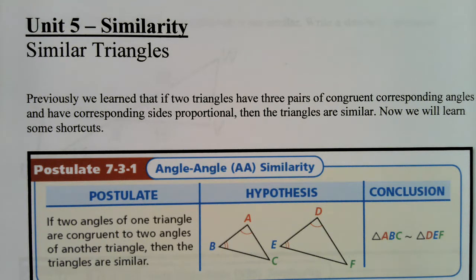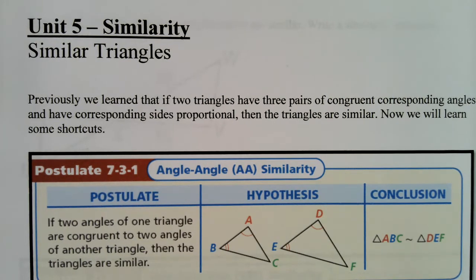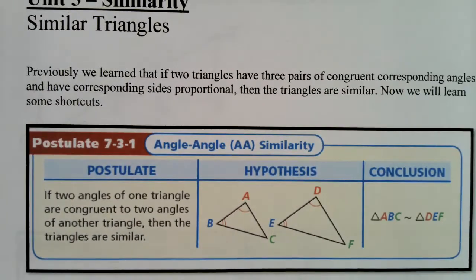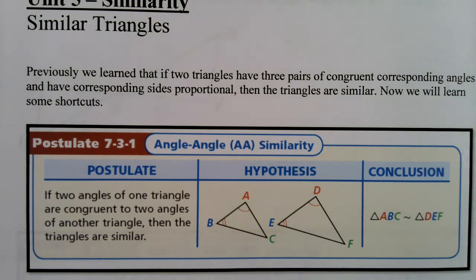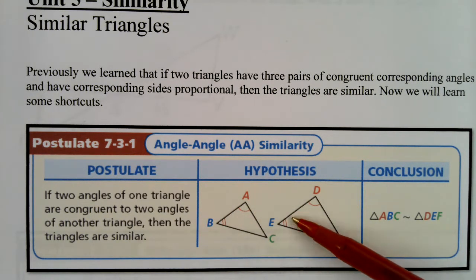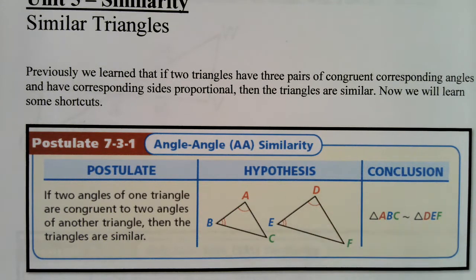Now we're going to learn some shortcuts, and there are three shortcuts that we're going to do today — that's it, there are no more shortcuts after today. The first shortcut is called Angle-Angle Similarity. That says if two angles of one triangle are congruent to two angles of another triangle, then the triangles are similar. So all you need to know is that two angles from one triangle are congruent to two angles from another triangle, and that's enough to conclude that the two triangles are similar.